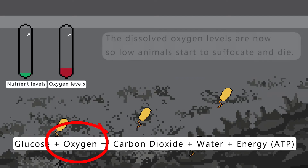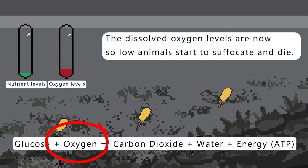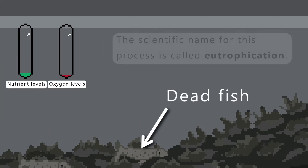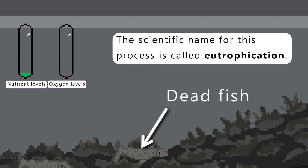The dissolved oxygen levels are now so low that animals start to suffocate and die. This area is now described as a dead zone. The scientific name for this process is called eutrophication.